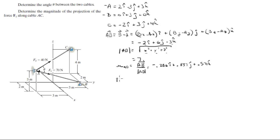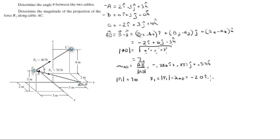You know that the magnitude of F1 is equal to 70 newtons, so multiplying this magnitude by the unit vector gives you the Cartesian vector form of the force, which comes out to be negative 20i plus 60j minus 30k.